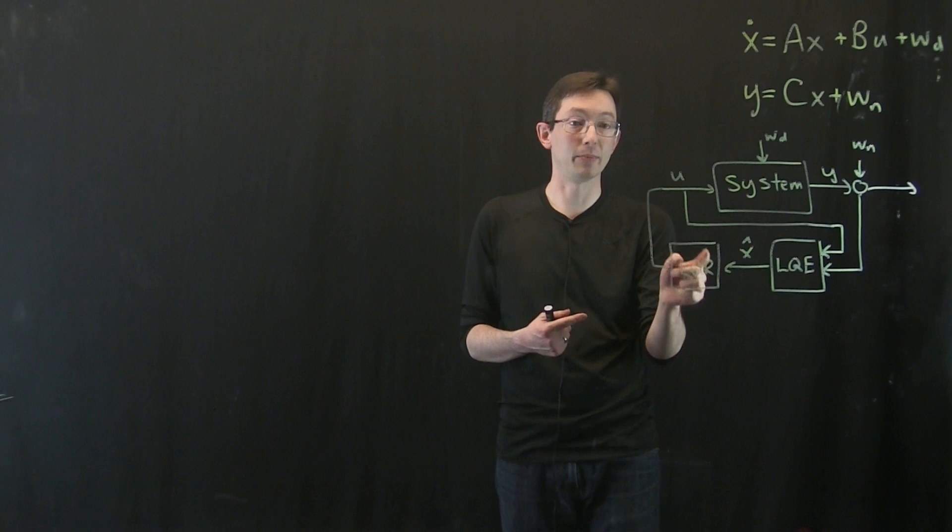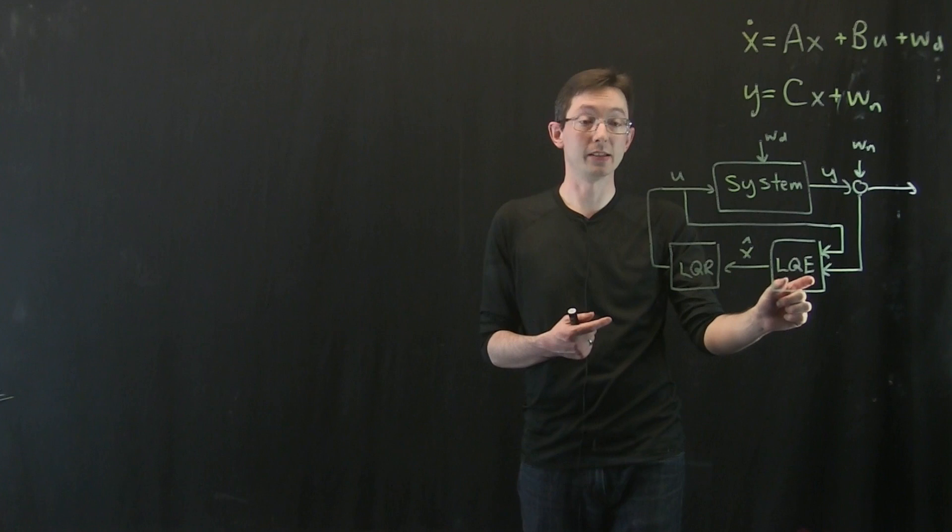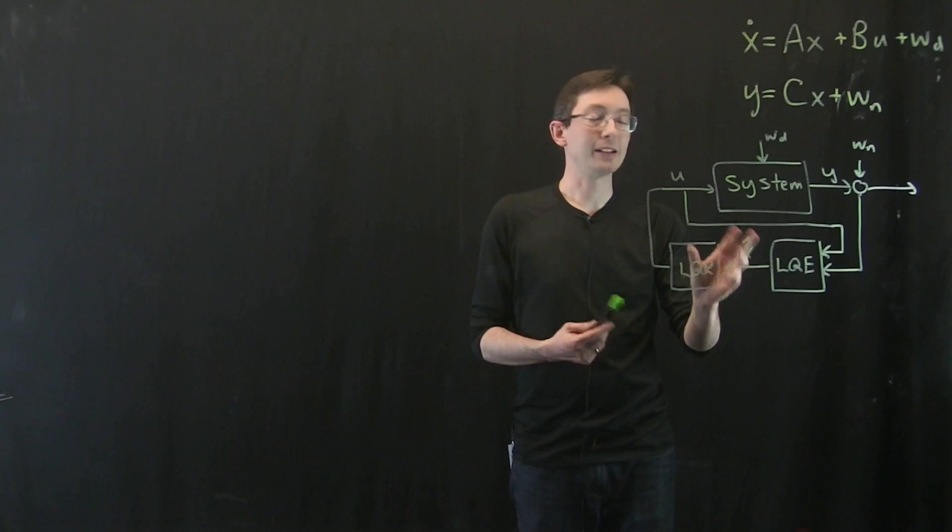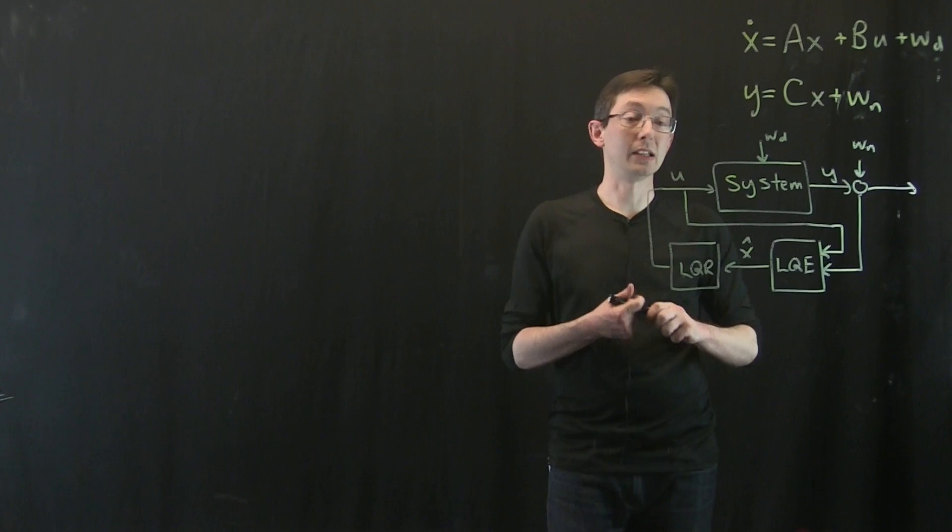So I choose this LQR to place the eigenvalues of the closed loop system here. I choose the Kalman filter gains to place the eigenvalues of my estimator dynamics. And it's not obvious, but it's very cool that when I combine these, I retain those same dynamics.